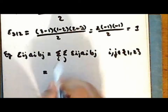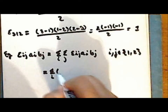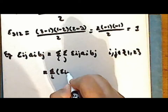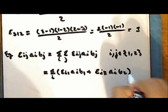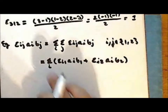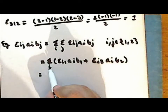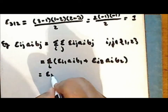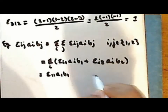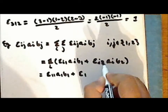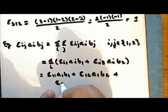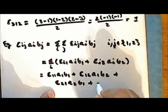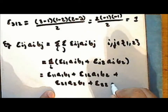Expanding the inner sum, we have the sum over index I of: epsilon sub I1 times A sub I times B1, plus epsilon sub I2 times A sub I times B2. Expanding over the index I, which ranges from 1 to 2, we get epsilon sub 1,1 times A1 times B1, plus epsilon sub 1,2 times A1 times B2, plus epsilon sub 2,1 times A2 times B1, plus epsilon sub 2,2 times A2 times B2.